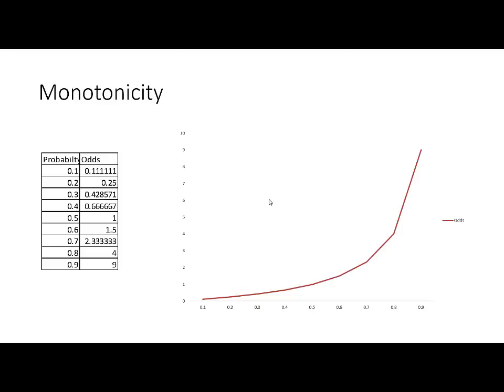For each probability ranging from 0.1 to 0.9, I have calculated the odds of success. As you can see in the graph, it's increasing and monotonic in nature — as the probability goes up, the odds also go up. It ranges from 0 to positive infinity.